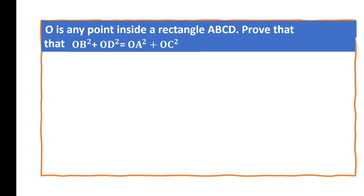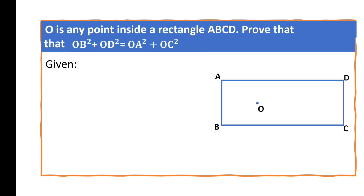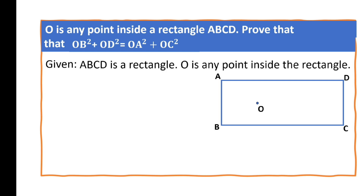O is any point inside a rectangle ABCD. So what is given here? A rectangle ABCD, with O as any point in it — like that we have to draw. Now let us write what is to prove: OB² + OD² = OA² + OC².